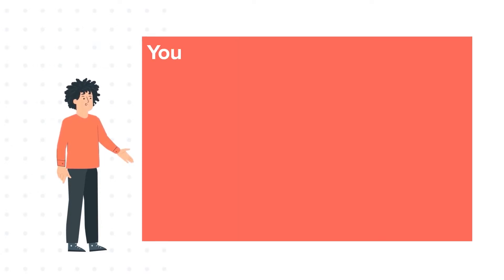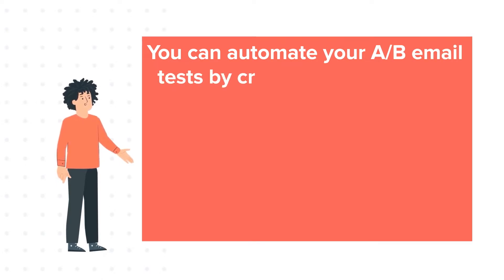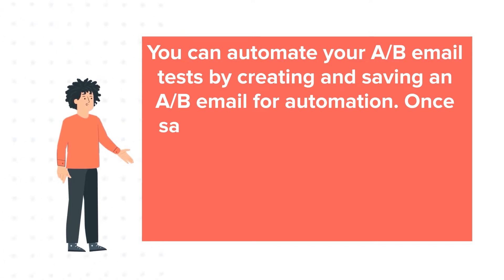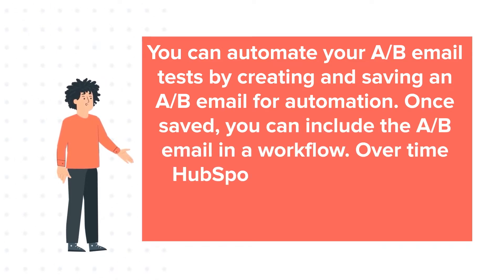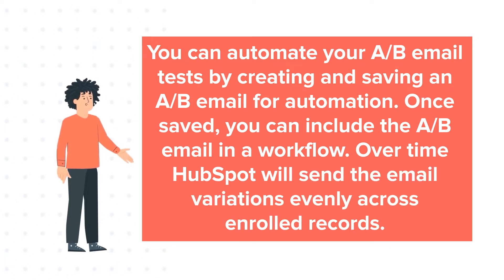You can automate your A/B email test by creating and saving an A/B email for automation. Once saved, you can include the A/B email in a workflow. Over time, HubSpot will send the email variations evenly across enrolled records.